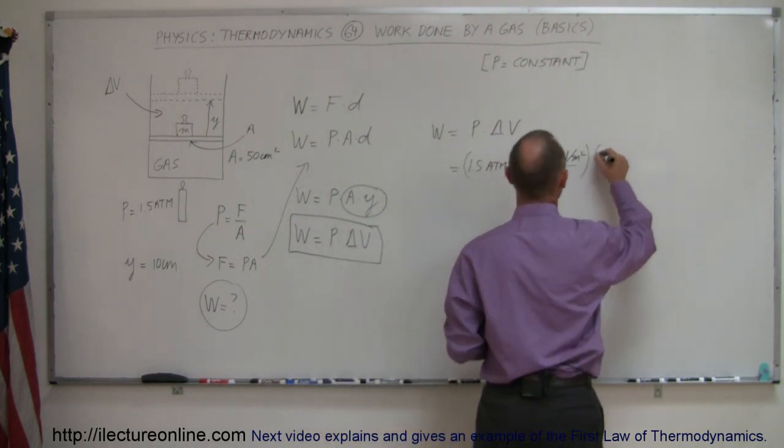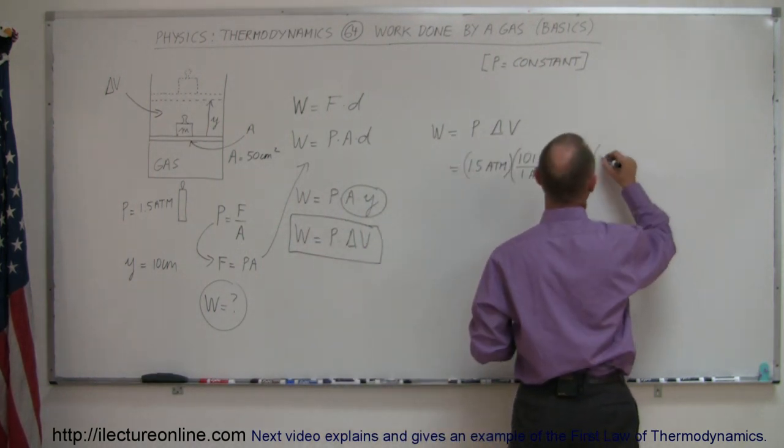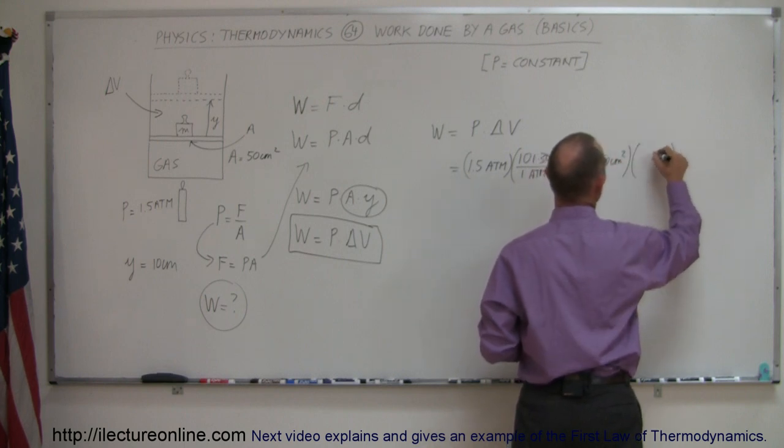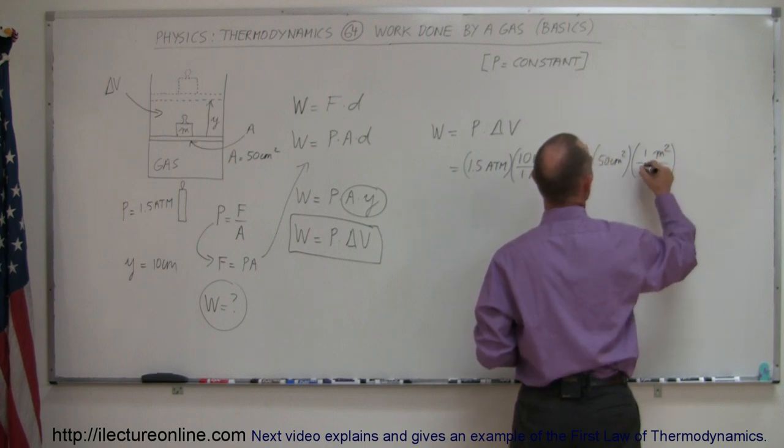The change in volume is the cross-sectional area, which is 50 square centimeters, converted to square meters. One meter is 100 centimeters, and we have to square that.